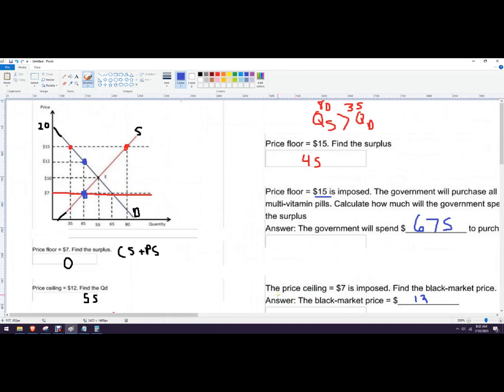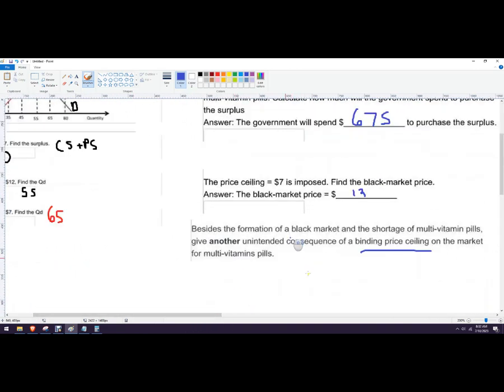And finally they could add on sometimes called tying. They can tie on the purchase of something else. So like you have to buy, I don't know, a $5 bottle of Gatorade to get the cheap pills or something like that.